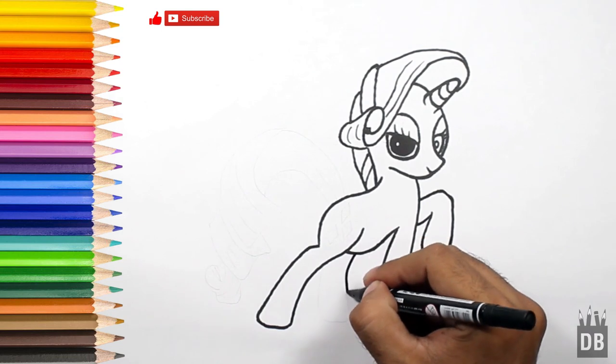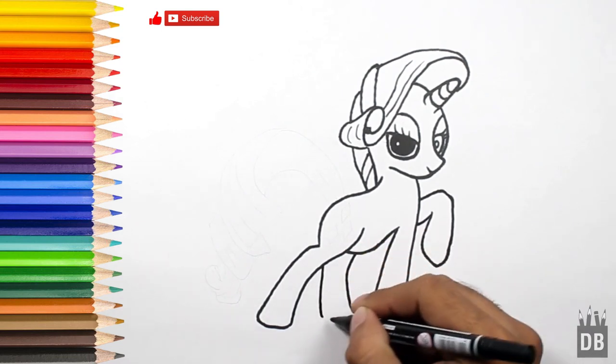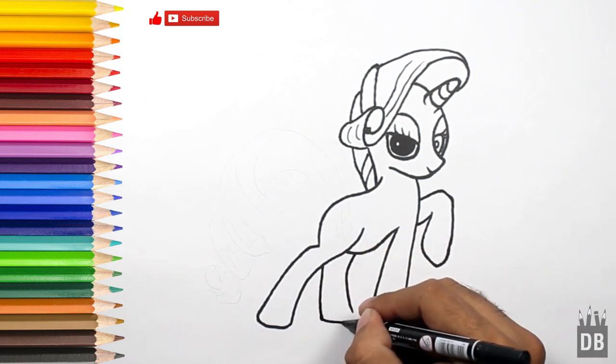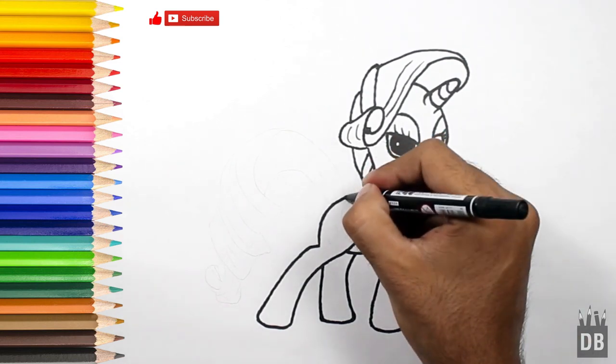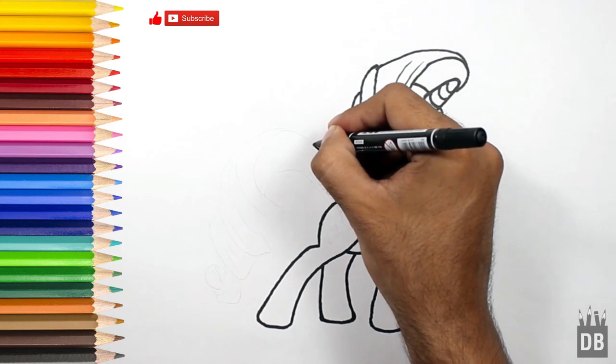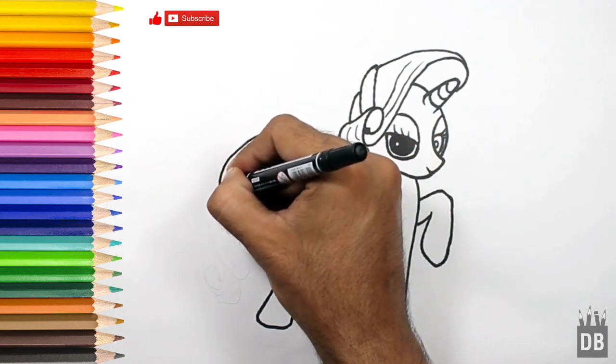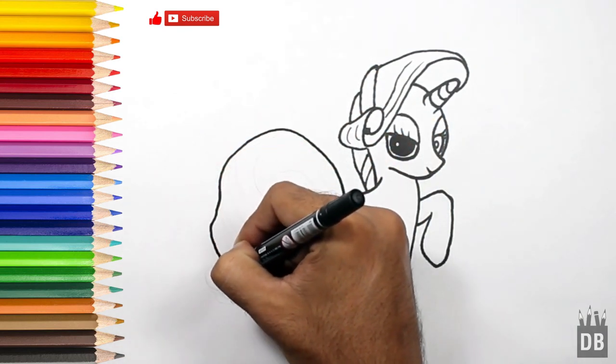Okay, now the back leg. Now we are going to make the tail. First make a shape, a big shape.